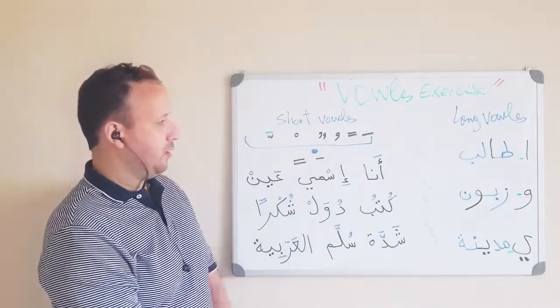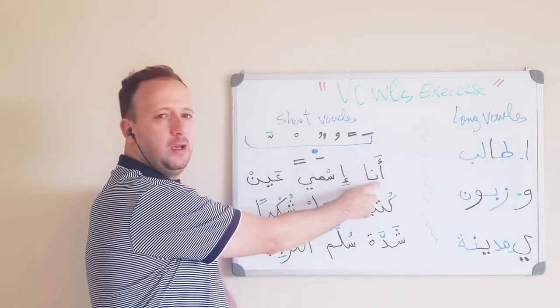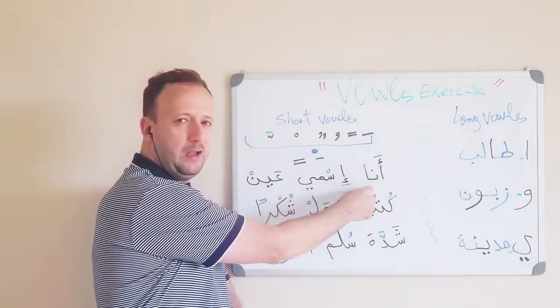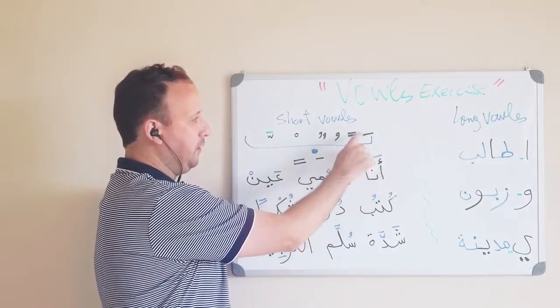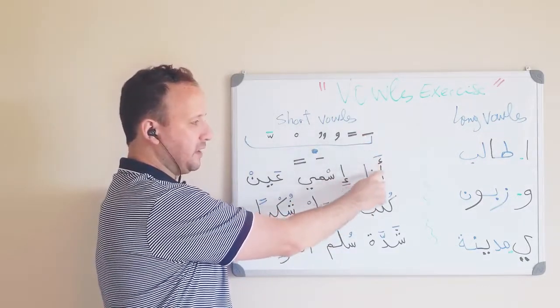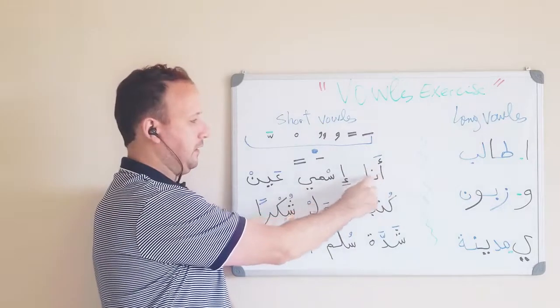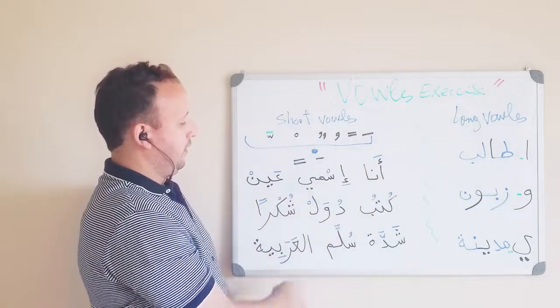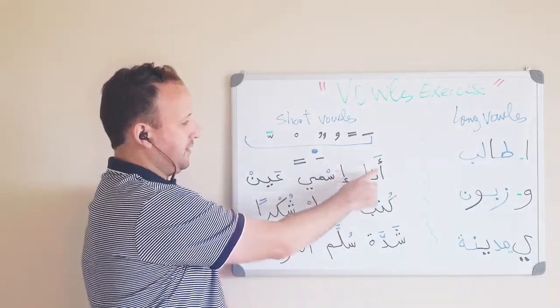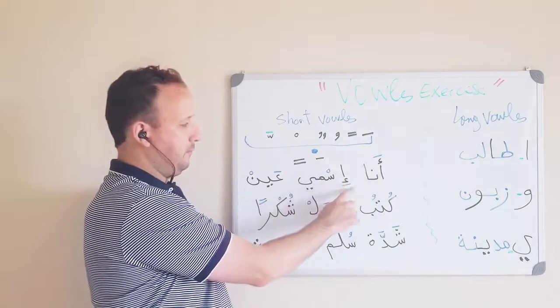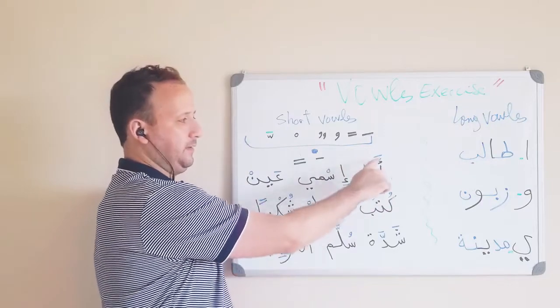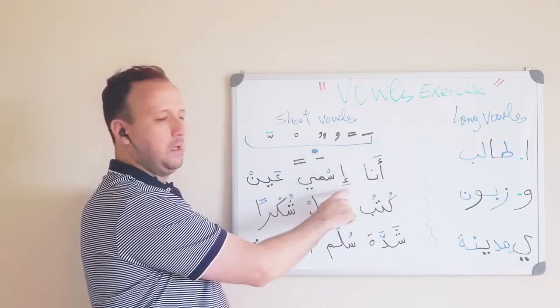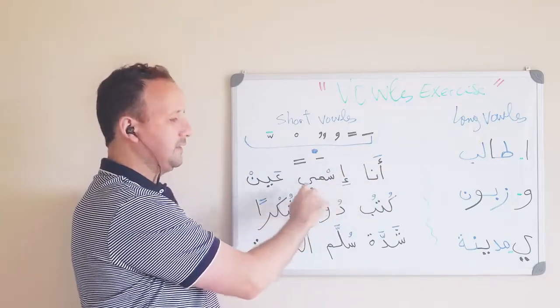So let's look at some examples. This word is ana. Ana. So we have fatha on the top. So it's going to be a. Ana. This is the same as this one, it's also hamza, but it's in the bottom. So it's not a anymore, it's i. This is ana. This is i. Ismi.